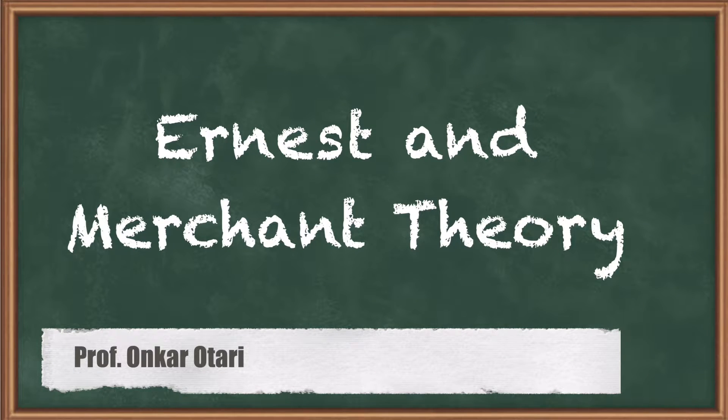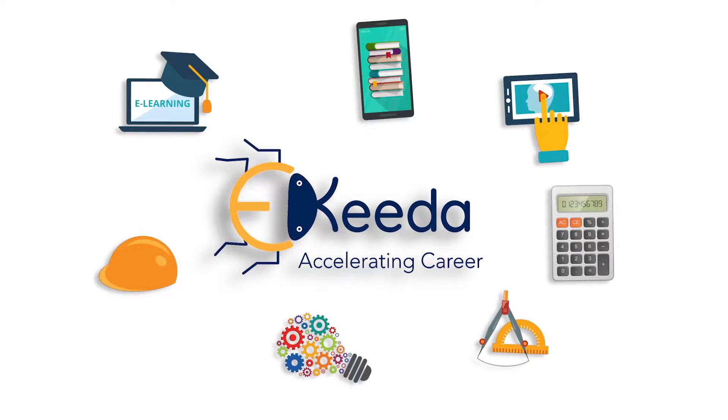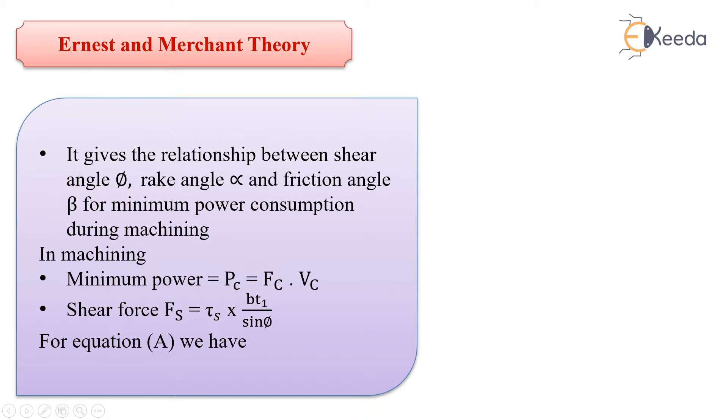Dear students, we are going to learn and understand the Ernst and Merchant's theory for metal cutting. This theory proposes the relationship between shear angle phi, friction angle beta, and rake angle alpha, and tells us about the minimum power consumption during the metal cutting operation.